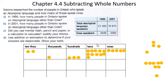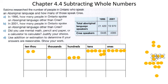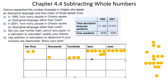So here I have eleven tens. I have to remove four of them — one, two, three, four. Let's remove four of them. Now I'm left with seven tens.